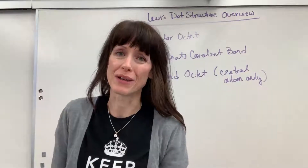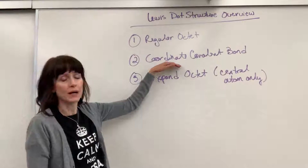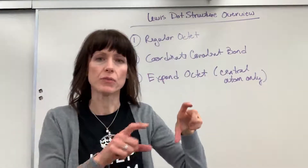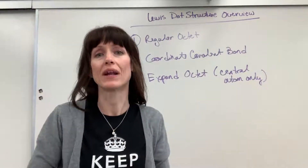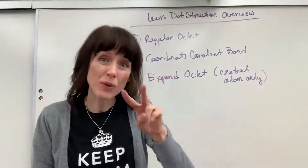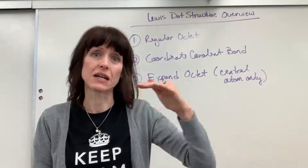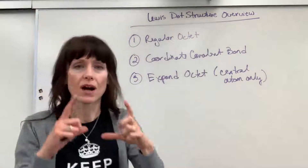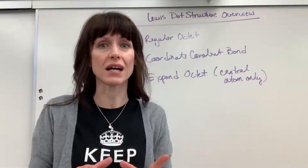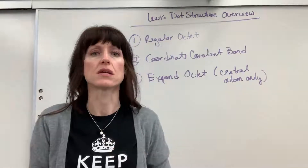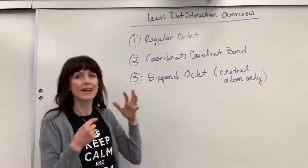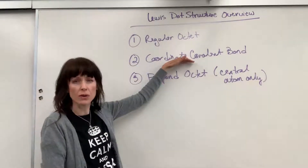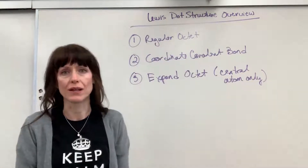Now, if you cannot do a regular octet, that's where you're going to do the coordinate covalent bond. Remember, this is where one atom moves in and says, 'Let's share, but I won't give you anything.' One atom donates both of the electrons — the two electrons — in the bond. What's brilliant about this is that it allows for an octet. You can still maintain an octet if one atom is sharing the two electrons, so you always try and get an octet, and if push comes to shove, you do a coordinate covalent bond.